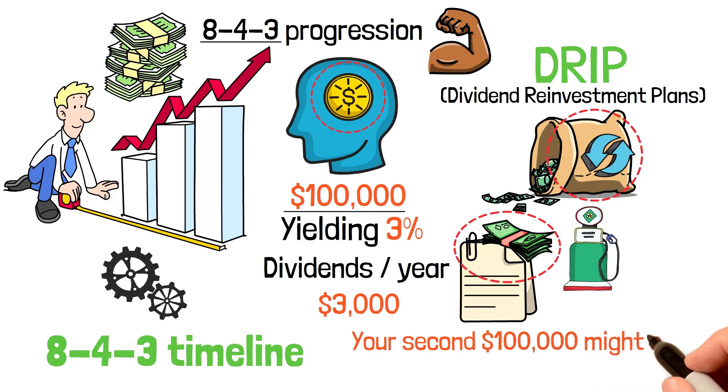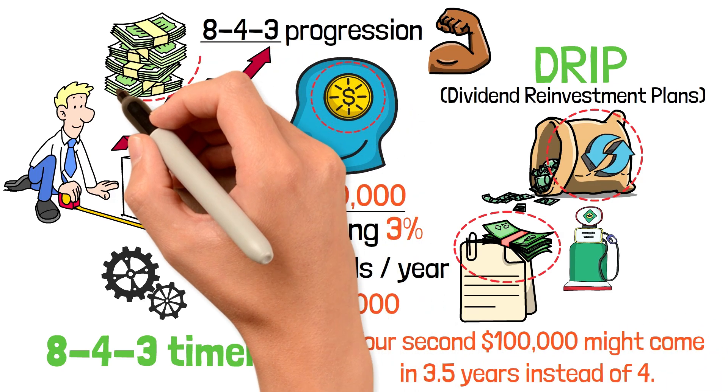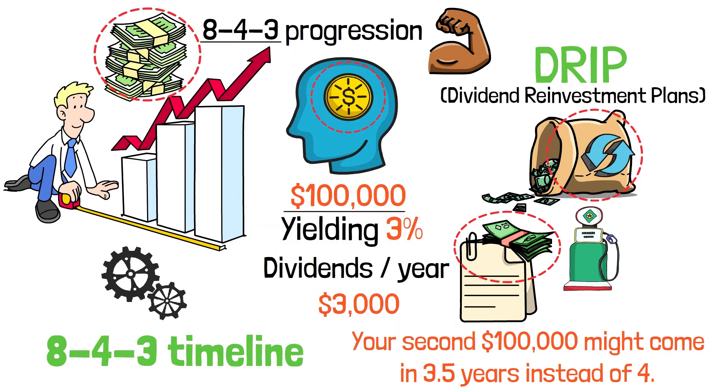This dividend reinvestment accelerates the 8-4-3 timeline. Your second $100,000 might come in 3.5 years instead of 4. Over decades, this acceleration can add hundreds of thousands of dollars to your final portfolio value.